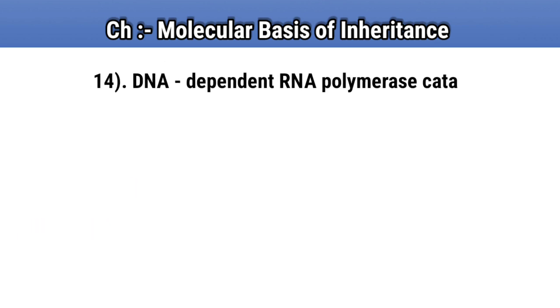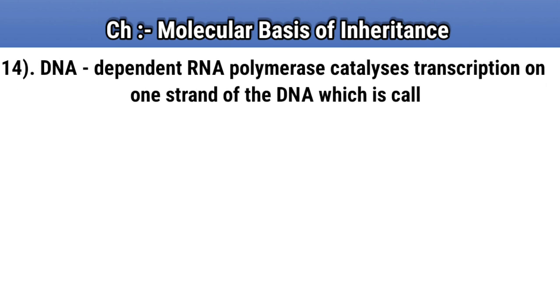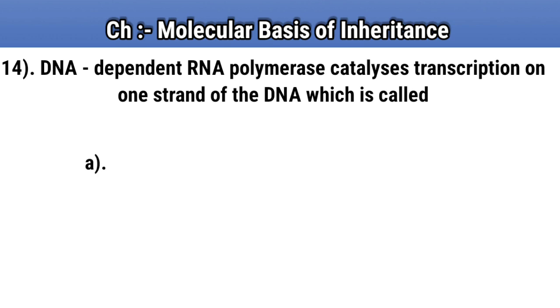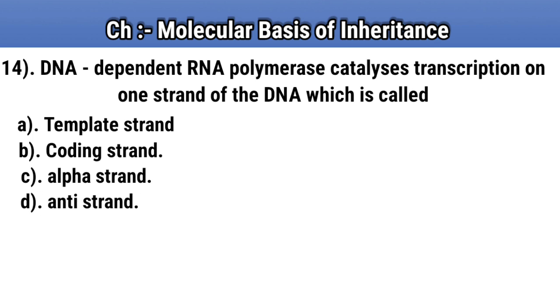Question number 14. DNA-dependent RNA polymerase catalyzes transcription on one strand of the DNA which is called. Option A: template strand. Option B: coding strand. Option C: alpha strand. Option D: anti strand. Answer A: template strand.